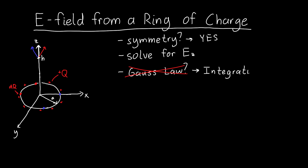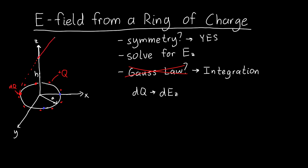We're going to find a bunch of little dqs and figure out the electric field due to those dqs. Let's take this little piece of charge dq on the ring. It is some distance away from the point at height h. This dq generates an electric field dE pointing in a certain direction, but we only care about the z component: dEz.